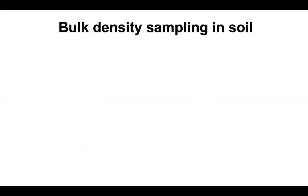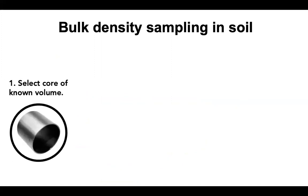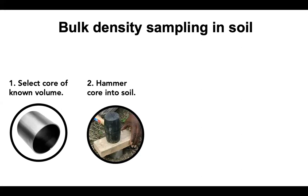This leads us into how we actually sample and measure bulk density in soil. First, we start with a core of known volume — usually about four inches across and about five inches deep. We then fill that with soil by hammering the core into the ground. We want to make it so the top edge of the bulk density core is about flush with or even slightly below the surface of the soil.